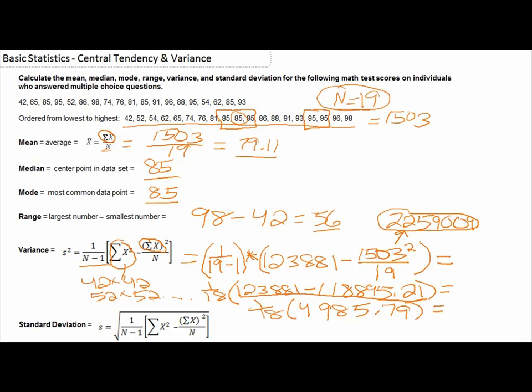So the very last step that we have here is to take that number we just obtained, that 4,985.79, and multiply that by 1 over 18, which really means that you're dividing by 18. So 4,985.79 divided by 18 is 276.99, rounding to the two decimal places. So this number right here is our variance.